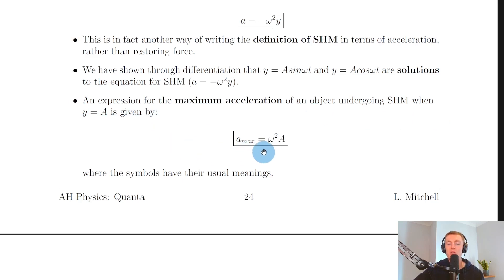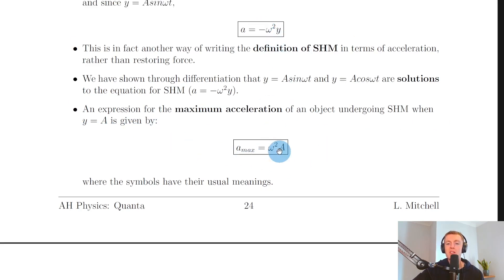So you can see we've got rid of the negative sign there and we've replaced y with a, that is, the maximum displacement from the equilibrium position.